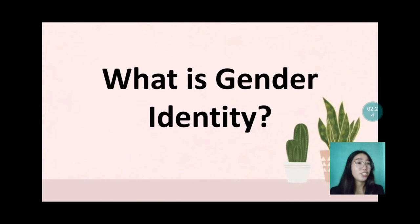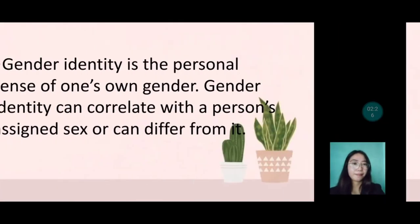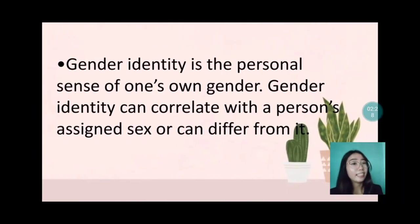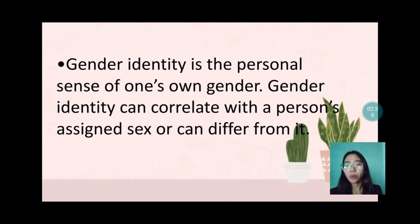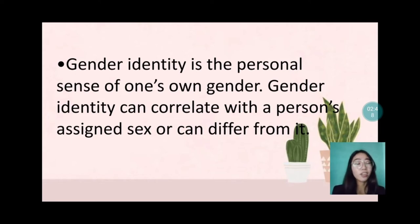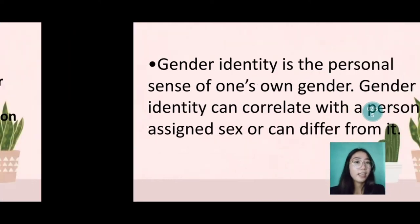What is Gender Identity? Gender Identity is the personal sense of one's own gender. Gender Identity can correlate with a person's assigned sex or can differ from it. In most individuals, the biological determinants of sex are congruent and consistent with the individual's gender identity.